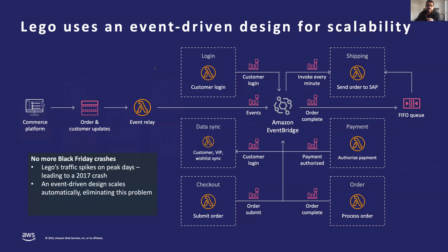Let us see a few customer case studies on serverless. Lego builds with an event-driven design, doing it nearly all on Amazon EventBridge. Back in 2017, Lego had a monolith, but after a Black Friday sale crashed their entire system, they were looking for something more scalable. They began decoupling their backend and building an event-driven serverless application. In 2019, Lego became completely serverless on AWS. When Amazon EventBridge launched, it was perfect for the hub-and-spoke event bus model they wanted, so Lego rebuilt their checkout event processing with EventBridge, giving them a much simpler way to operate their events rather than point-to-point connections.